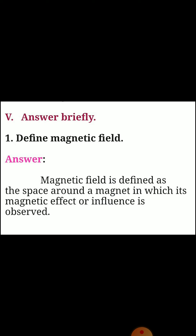Section five: answer briefly. First one: define magnetic field. Answer: magnetic field is defined as the space around a magnet in which its magnetic effect or influence is observed.